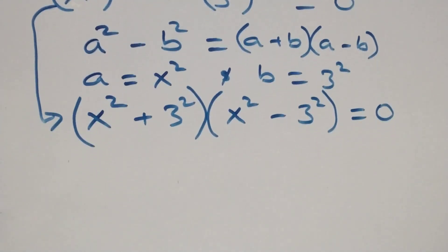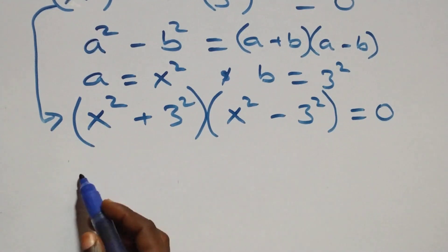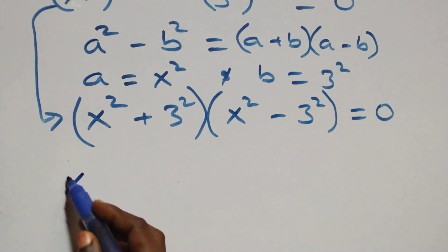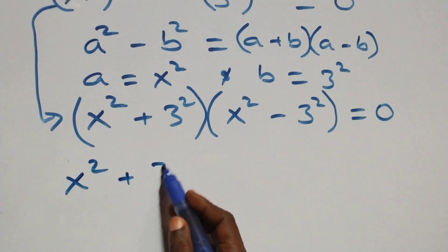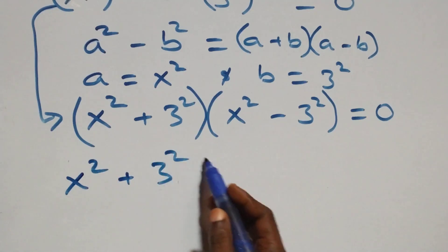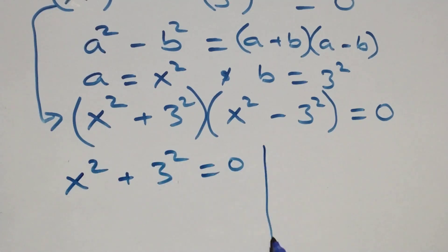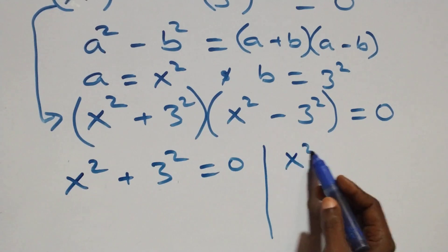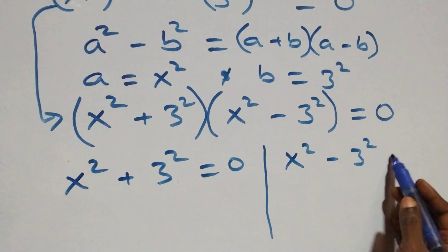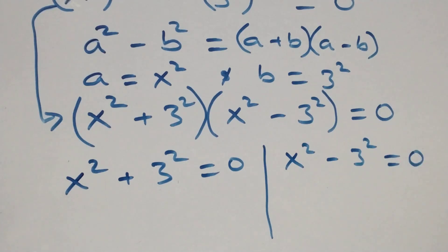Then the next step we have two possible cases: x squared plus 3 squared equals to 0, or x squared minus 3 squared equals to 0.